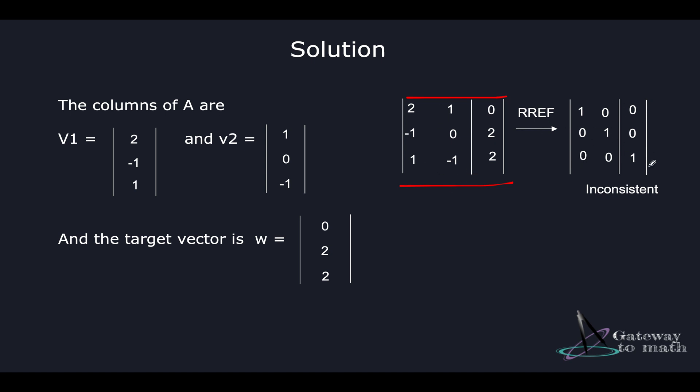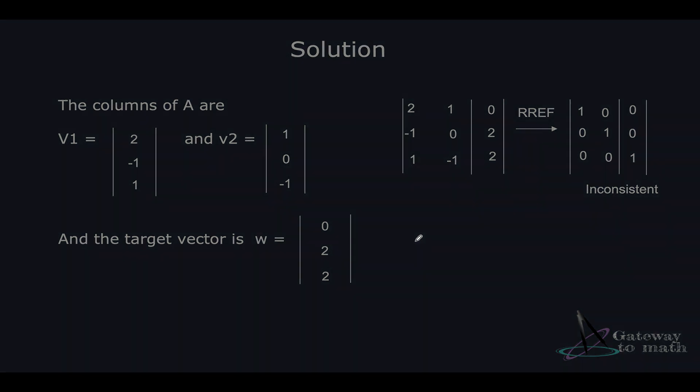The row reduced echelon form for this matrix is [1, 0, 0; 0, 1, 0; 0, 0, 1]. We take the last row and here it says 0 = 1, which is not a valid condition and hence it is inconsistent. Since it's inconsistent, we do not have any value of x which satisfies the given condition. It is an inconsistent problem statement.